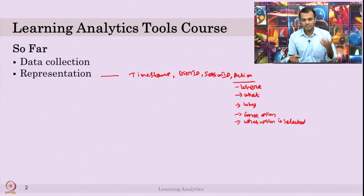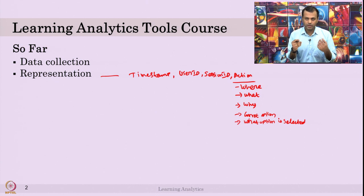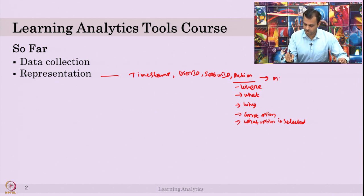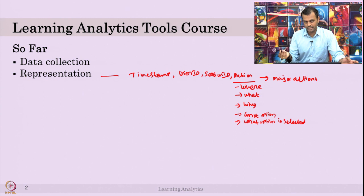Can I consider everything as an action? Not necessarily, because if you consider everything as an action, there will be too many features. So if you are talking about action, think of the major actions they do — only the major actions. For example, in Moodle, a MOOC system, or a technology-enhanced learning environment, what are the major actions they do?